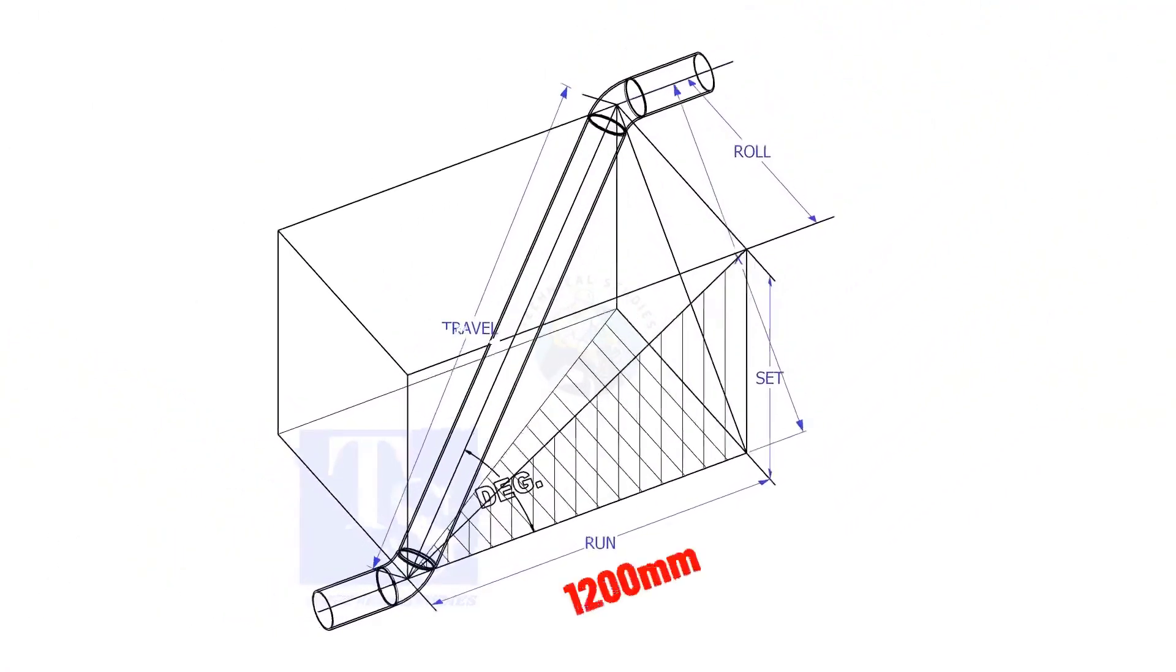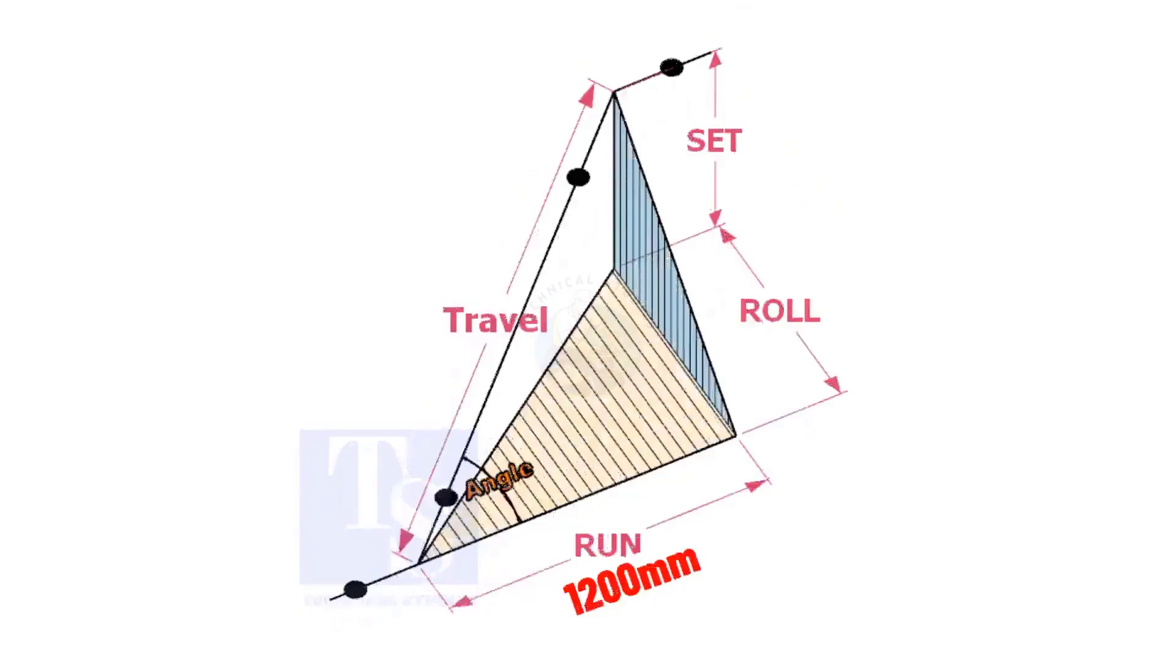Assume that the run is 1200 millimeters, set is 1000 millimeters and the roll is 800 millimeters.